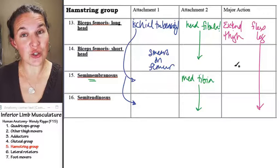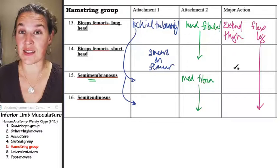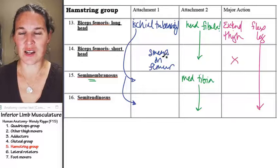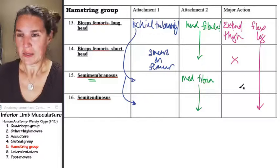Do you think the short head of bicep femoris is going to extend the thigh? No, it doesn't even cross the hip joint, so it can't.